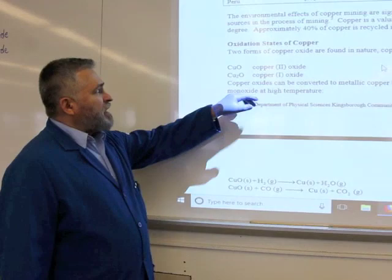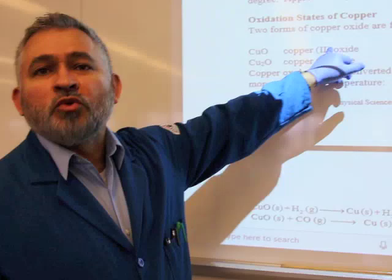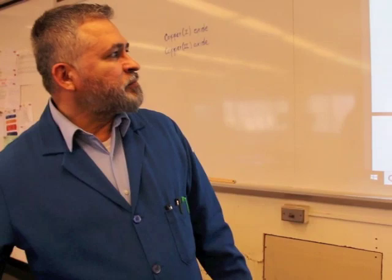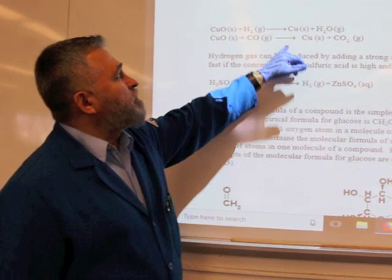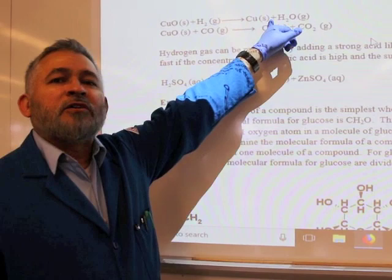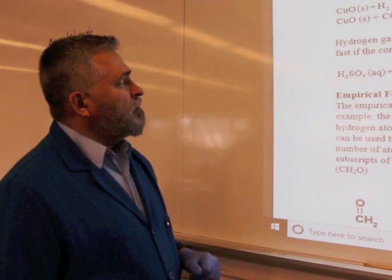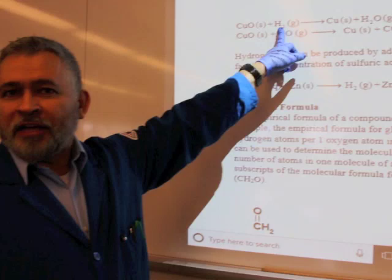The purpose is to find the formula of a copper oxide. You may have copper one oxide or copper two oxide — our job is to find which one of those we have. We know that copper oxide reacts with hydrogen gas to form copper solid — pure copper — and we all know the color of copper solid. We will also get water as a byproduct. Another way to do this is using carbon monoxide, but today we are going to do the demonstration using only hydrogen gas.